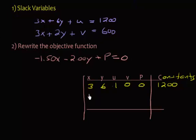Now, my second equation is going to be 3x, 2y. Notice that there are no u's, so it's just going to be 0. There is 1v, no p, and a constant of 600.